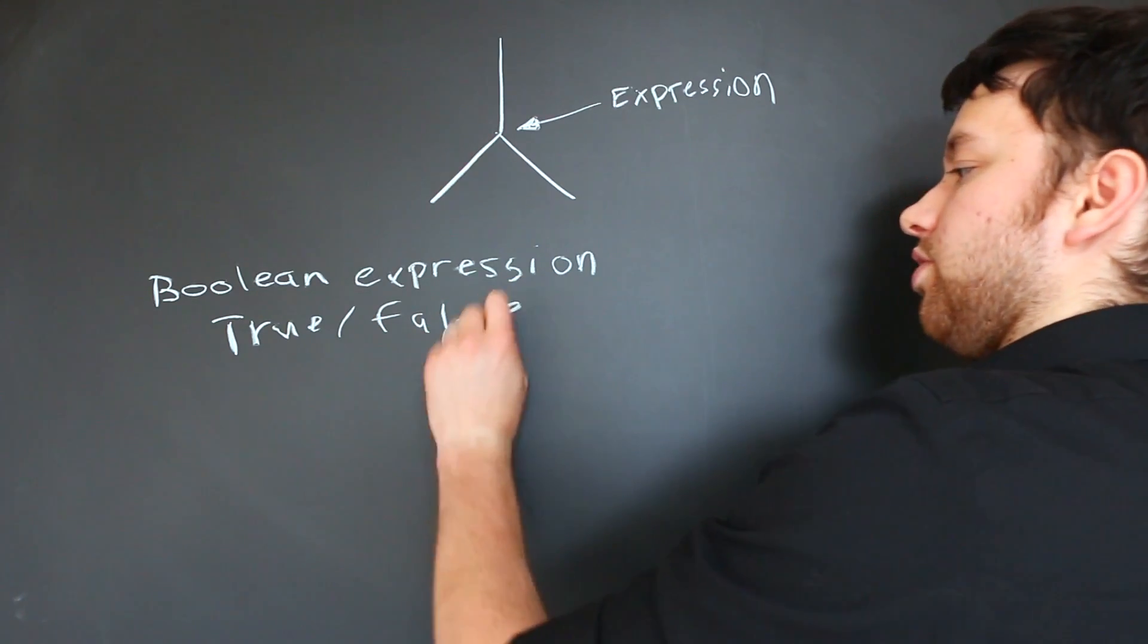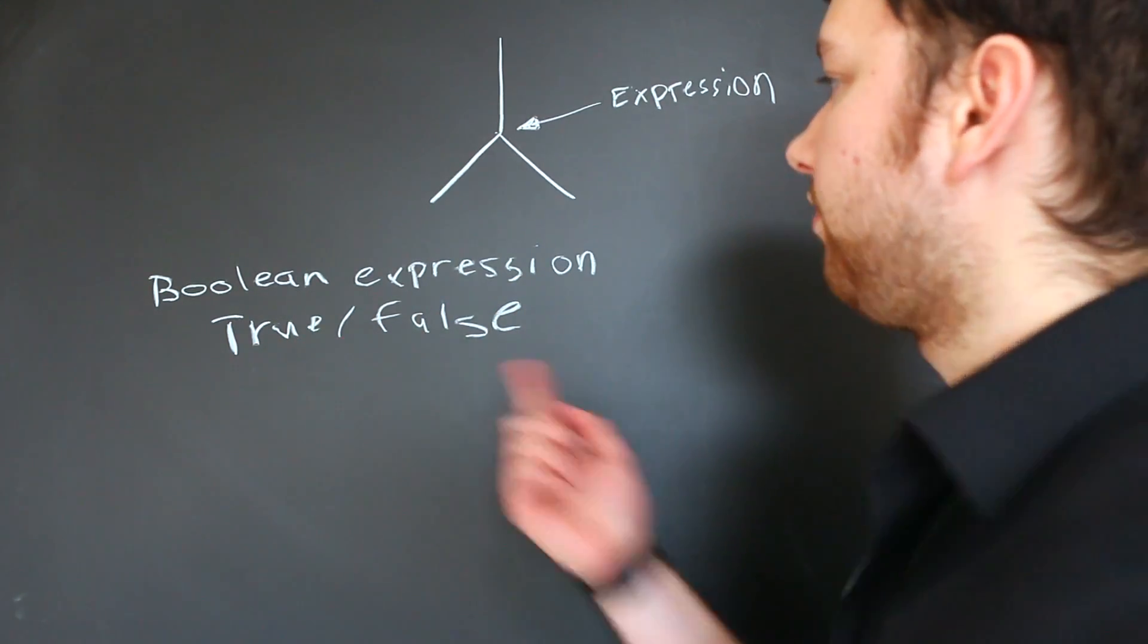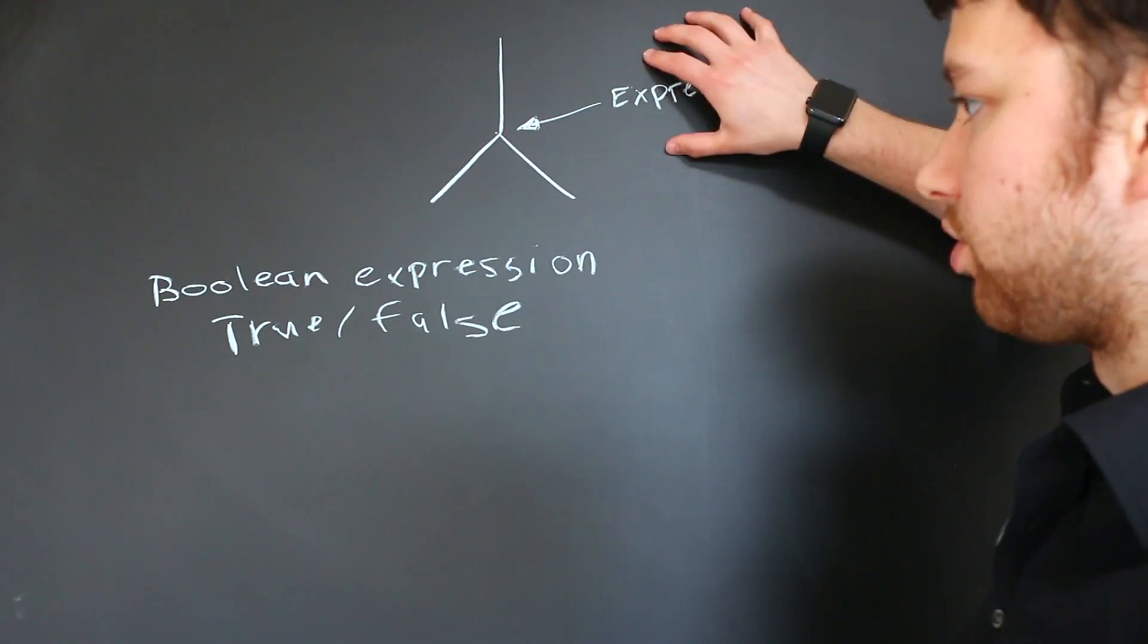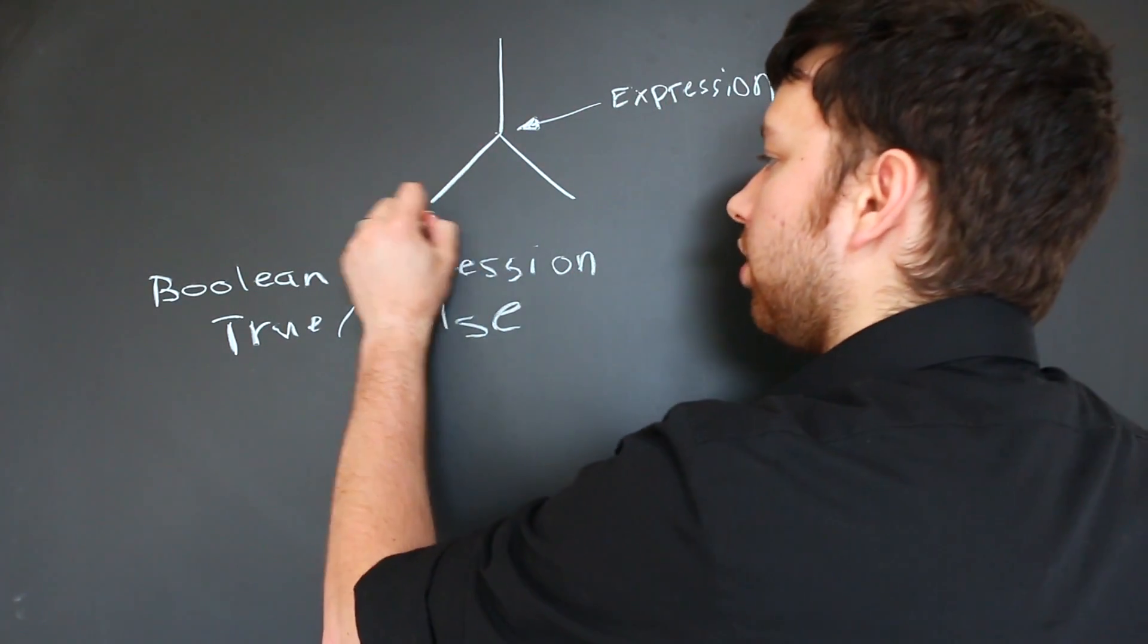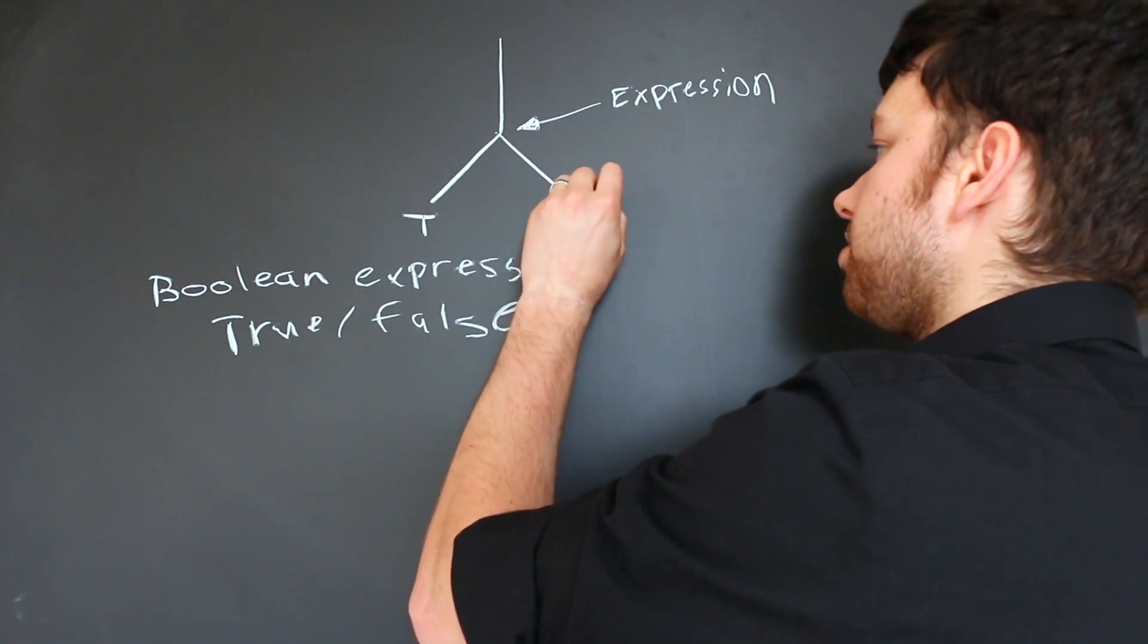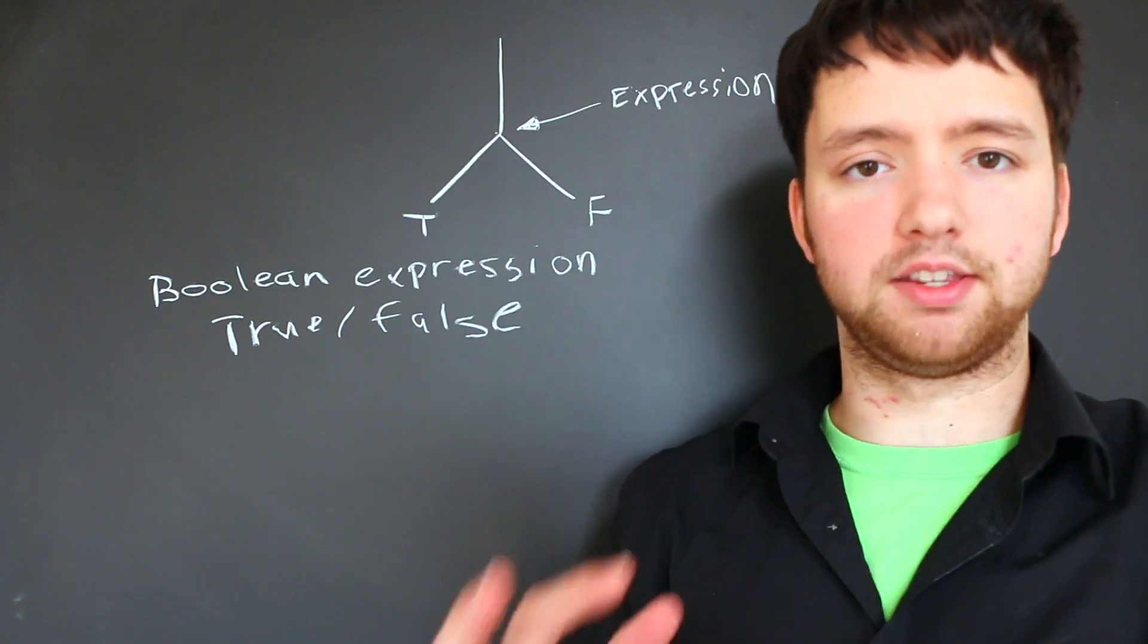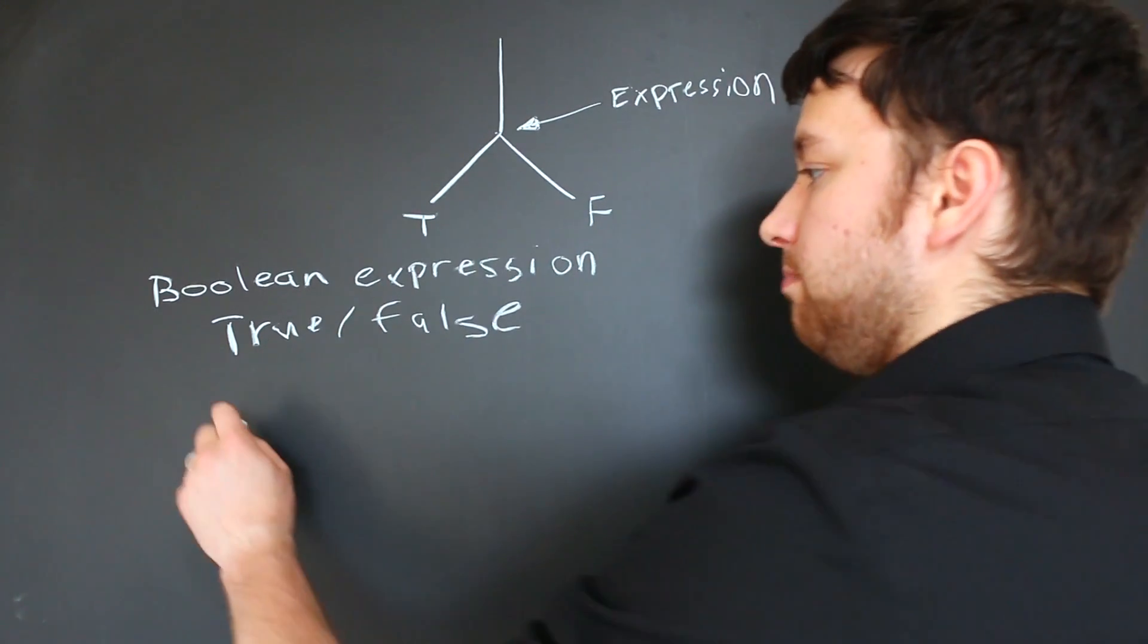So you can see that there's two states, true or false. So we can ask some question. That would be the expression. If it's true, we're going to go down one branch. If it's false, we're going to go down another. And this is the basis for what's known as Boolean logic.